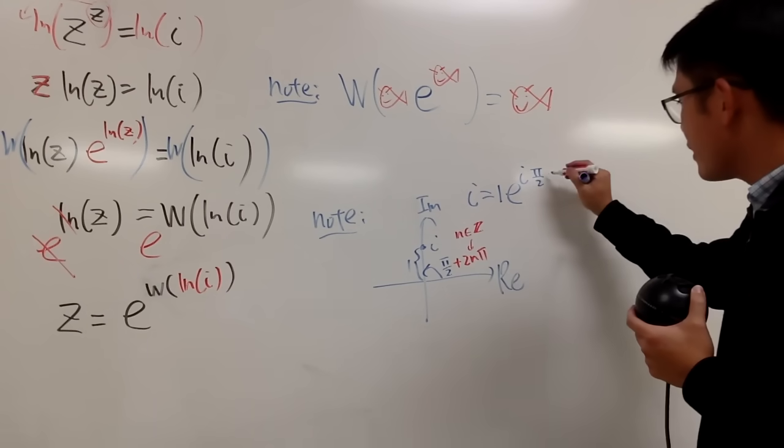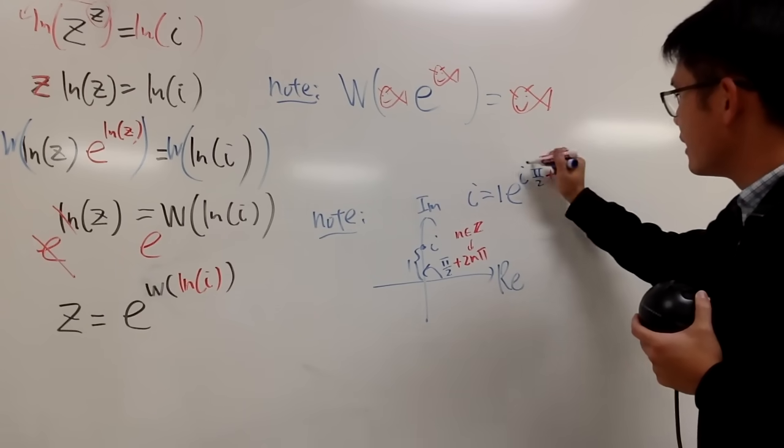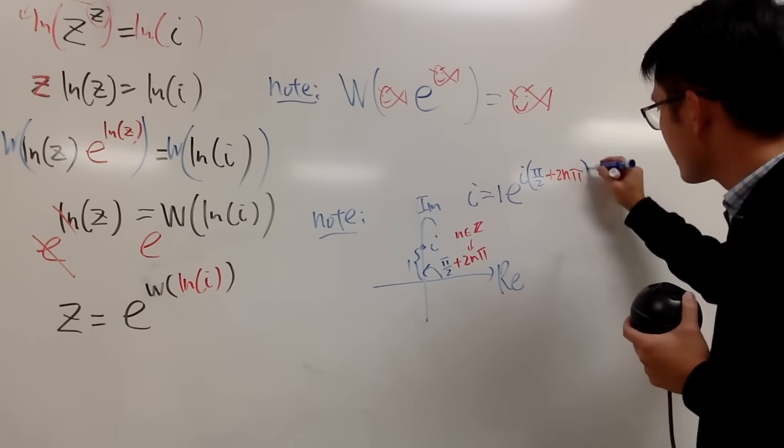So I will technically put this right here, plus 2nπ, like that. And then this right here will be my angle, that kind of thing.